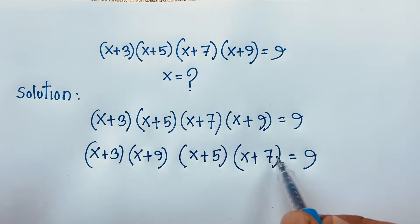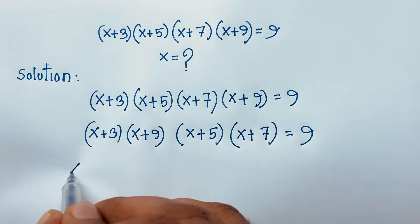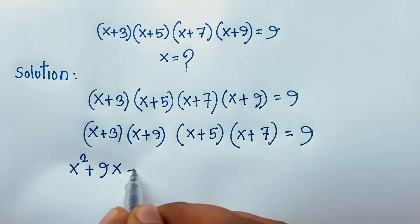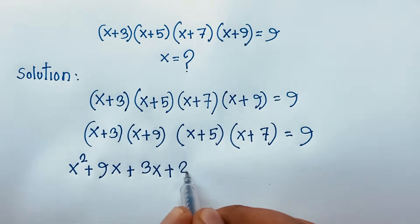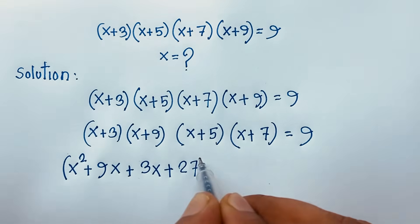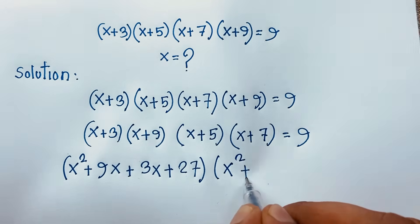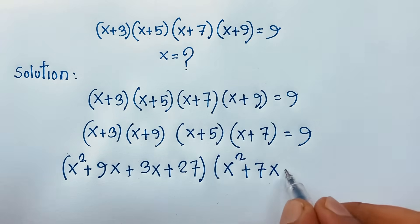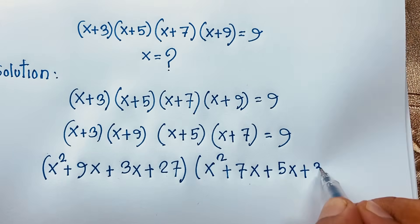Expanding (x+3)(x+9): x² + 9x + 3x + 27 = x² + 12x + 27. Expanding (x+5)(x+7): x² + 7x + 5x + 35 = x² + 12x + 35.